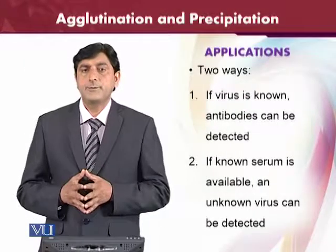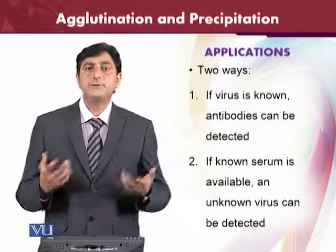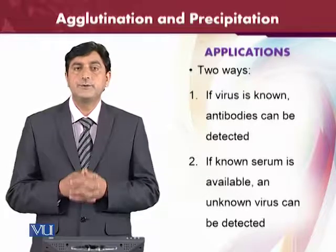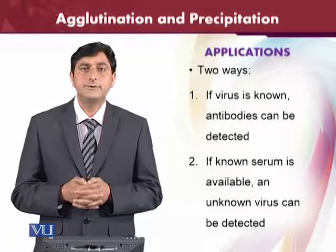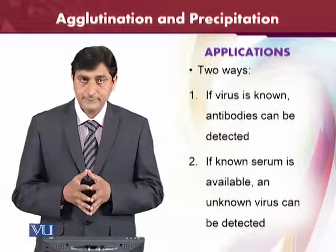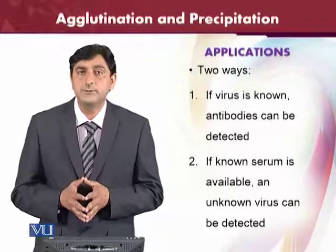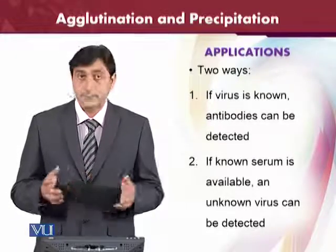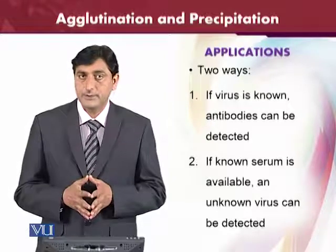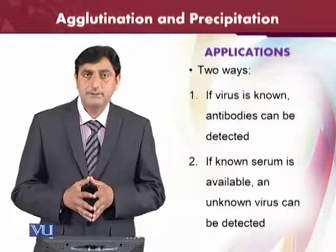There are two ways the agglutination and precipitation test is applied. One is to detect which antibodies are present — if the virus is already known, we can detect which antibodies are acting. However, if we already have the serum and the antibody is known, we can detect which virus is present. So we can apply the agglutination and precipitation test in two ways: to detect the virus or to detect the antibodies.